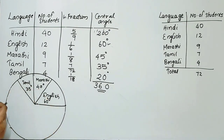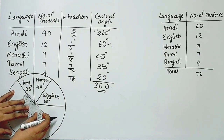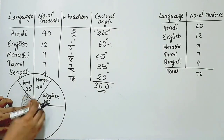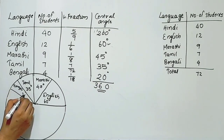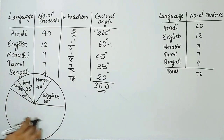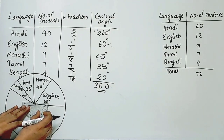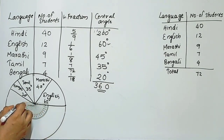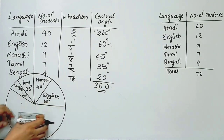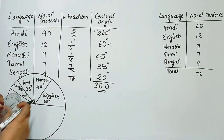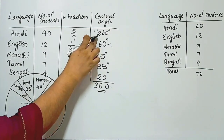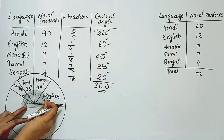Tamil is 35 degrees and Bengali is 20 degrees. We use the protractor and liner to mark 20 degrees for Bengali. Since the remaining angle is 20 degrees, we verify: 180 plus 20 equals 200 degrees. This confirms the marking is correct.